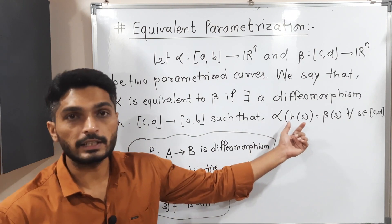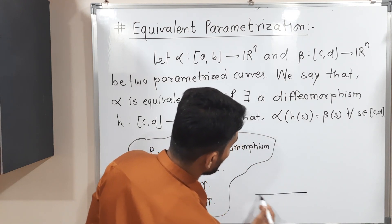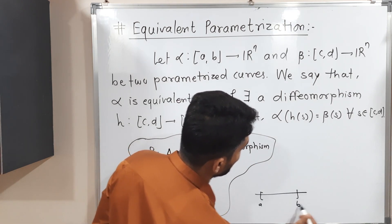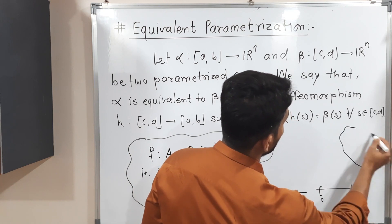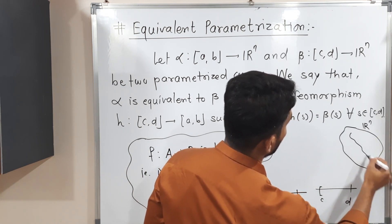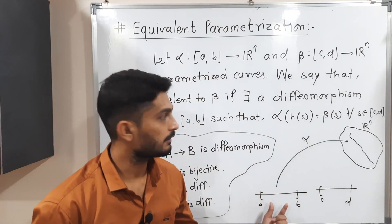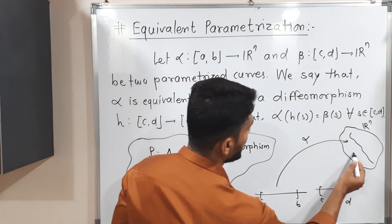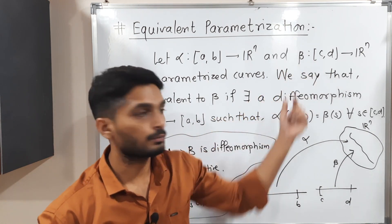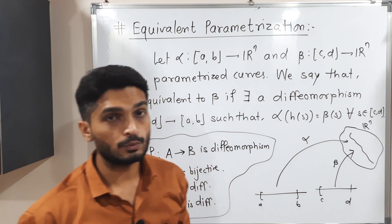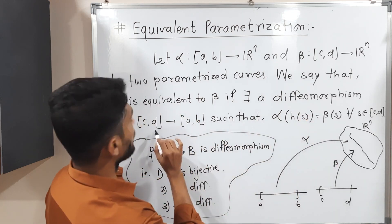Let me show this in a diagram. We have a closed interval [a, b], a closed interval [c, d], and a subset of R^n. Alpha is defined from [a, b] to R^n, and beta is a parameterization defined from [c, d] to R^n. We say alpha is equivalent to beta if there exists a diffeomorphism h from [c, d] to [a, b].